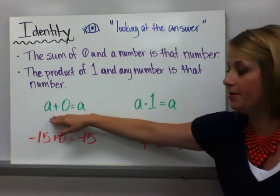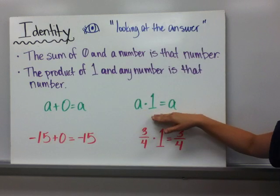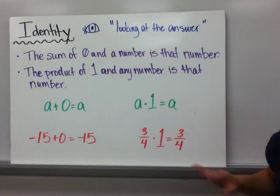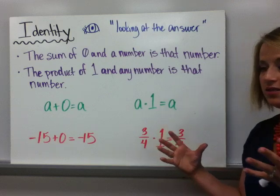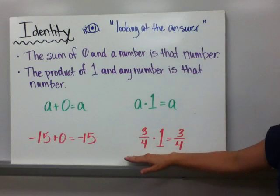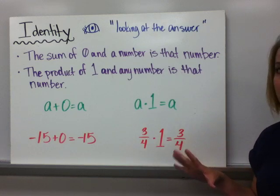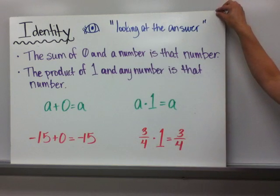In algebra, A plus 0 is A. In multiplying, A times 1 is A. Put some real numbers in there. Negative 15 plus 0. You don't even have to panic because you see a negative there. You just know that it's negative 15. Or here we have some fractions. No need to panic because you see a fraction. 3 fourths times 1 is 3 fourths.